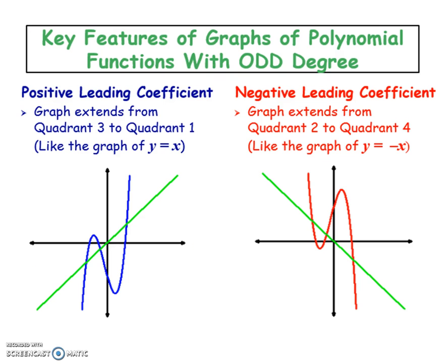To sum up, if you have a positive leading coefficient versus a negative leading coefficient for an odd degree, you're supposed to go from quadrant three to one. But if you have a flip, it's going to go from two to four instead.